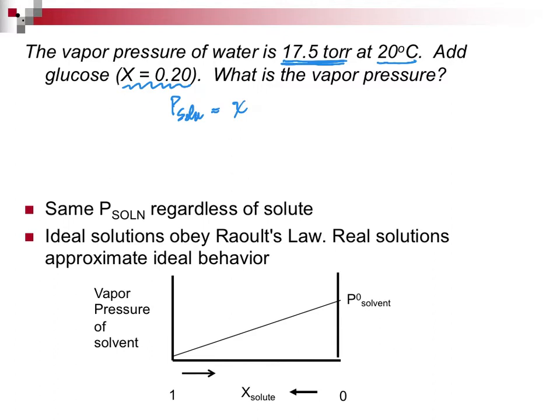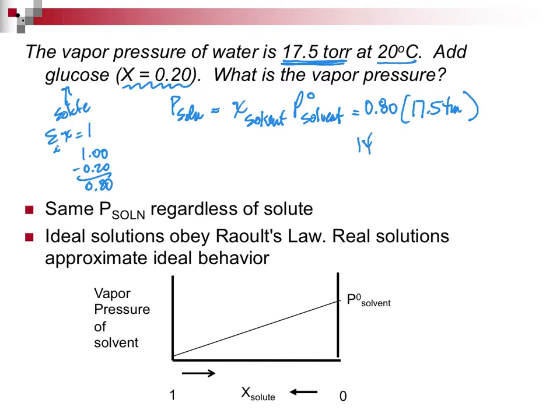Well, Raoult's law says take the mole fraction of the solvent, multiply it by the pressure of the solvent. And you're saying, hmm, mole fraction of the solvent. Glucose is the solute. How am I going to find it? Well, the sum of all the mole fractions has to be 1. 1 minus 0.200 comes to 0.80. So popping into that expression, 0.80 times 17.5 torr gives me 14 torr as my pressure of solution.